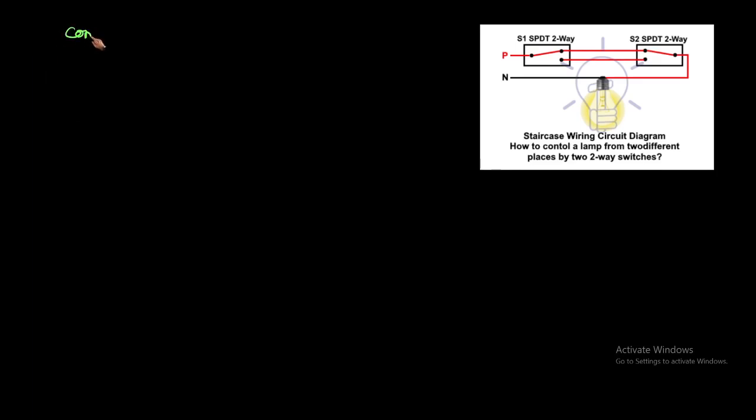Normally we will face this in our daily life. Controlling of lamp means either on or off conditions.